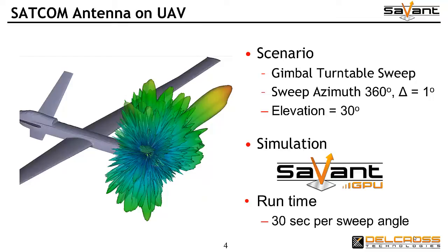In the simulation scenario, we will simulate a gimbal turntable sweep, sampling the full 3D antenna radiation pattern as the antenna is trained on an elevation angle of 30 degrees from the horizon. In 1 degree azimuth increments, a full 3D radiation pattern is captured with Savant simulation.